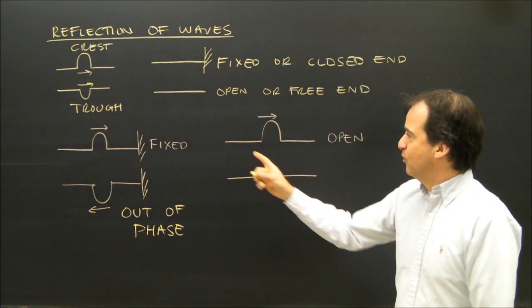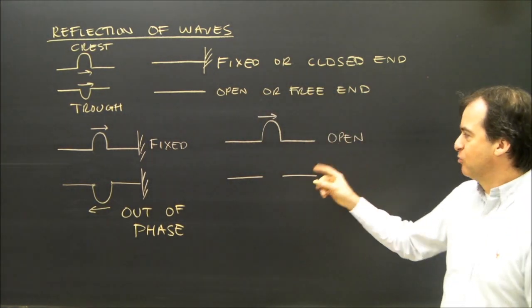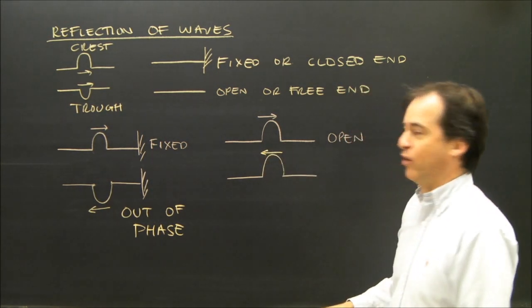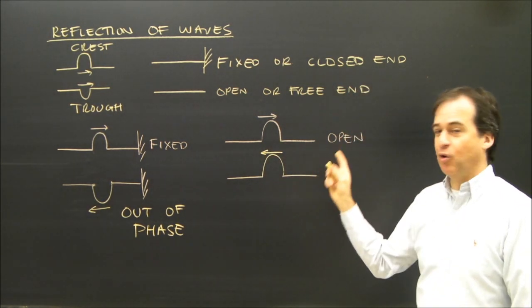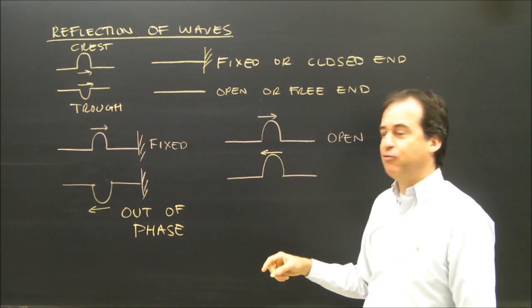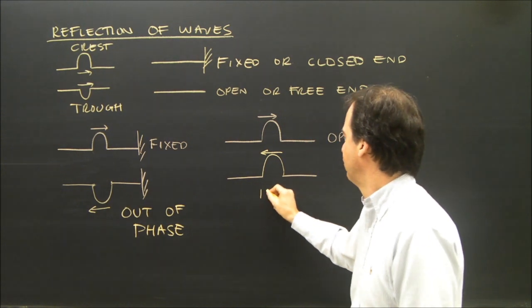In the other example, a crest went to an open end. What came back was another crest. So if a trough went back to an open end, it would come back as a trough. When something comes back and it looks the same as what it was like before, we call that in phase.